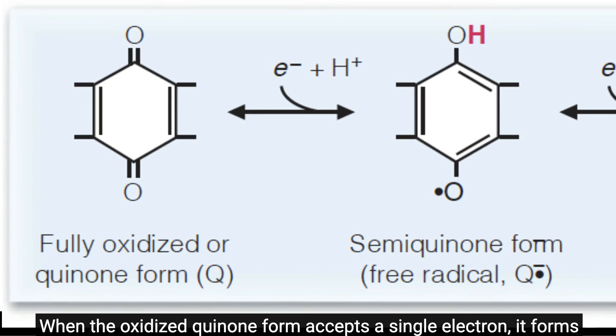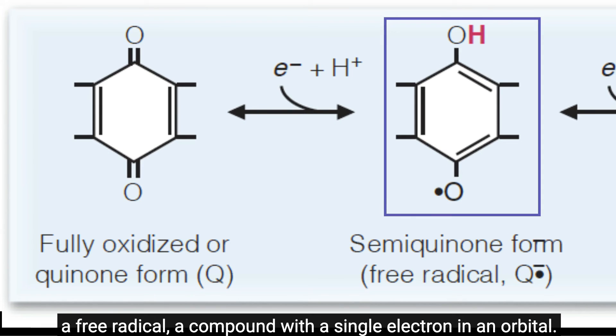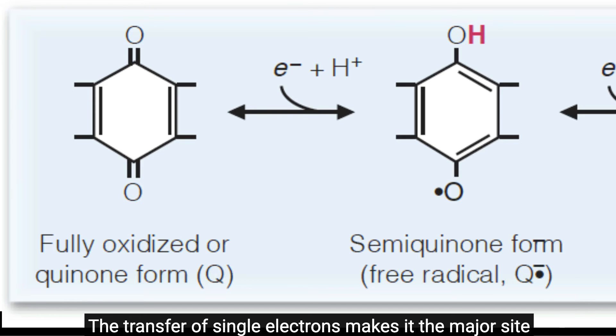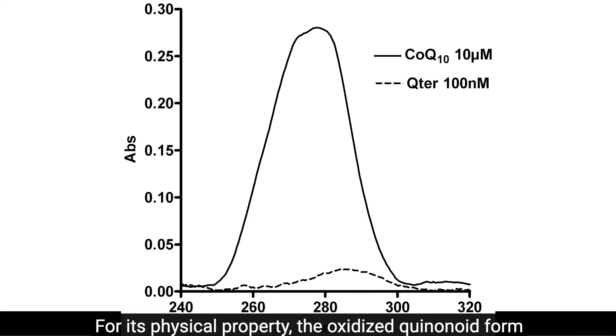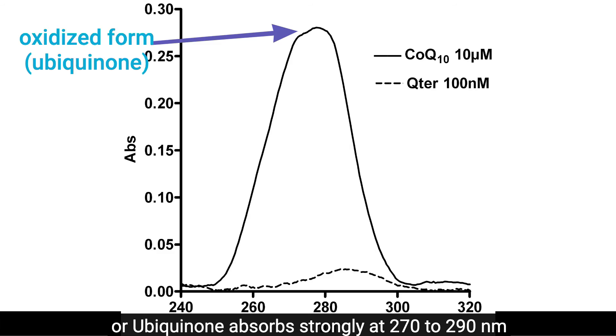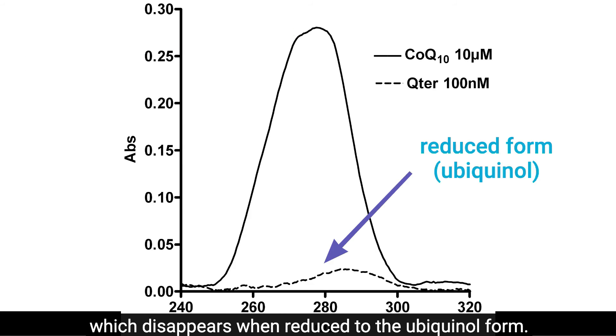When the oxidized quinone form accepts a single electron, it forms a free radical, a compound with a single electron in an orbital. The transfer of single electrons makes it the major site for generation of toxic oxygen-free radicals in the body. For its physical property, the oxidized quinonoid form or ubiquinone absorbs strongly at 270 to 290 nanometers, which disappears when reduced to the ubiquinol form.